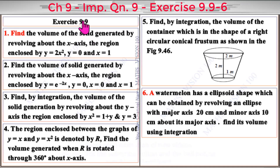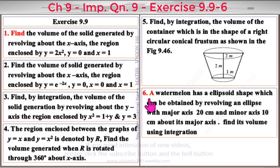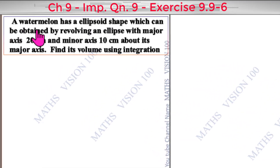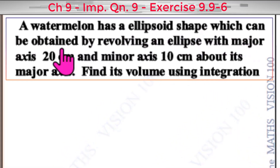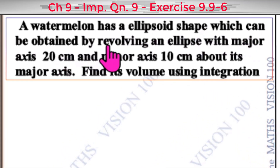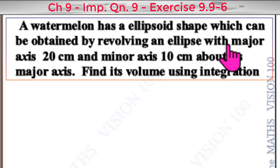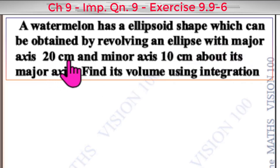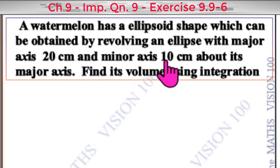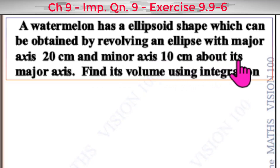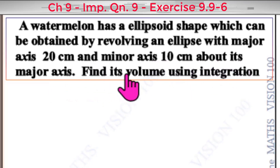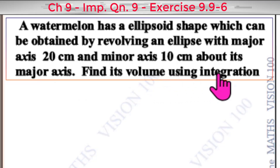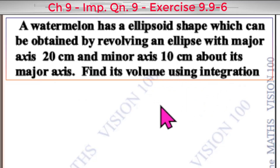Exercise 9.9, question number 6. A watermelon has an ellipsoid shape which can be obtained by revolving an ellipse with major axis 20 centimeters and minor axis 10 centimeters about its major axis. Find its volume using integration.